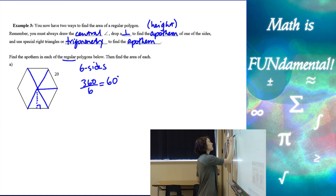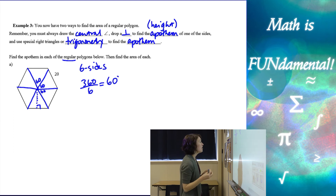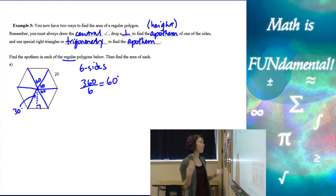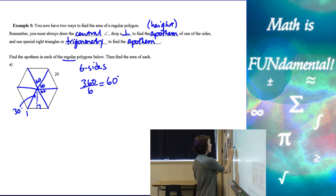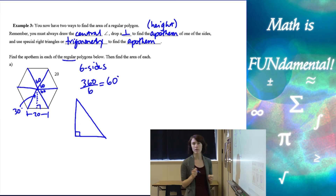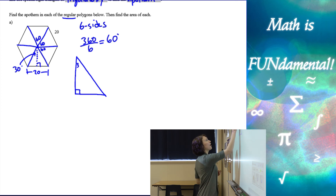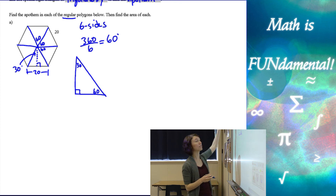If I find that central angle — angle one from the very beginning of this lesson — I'm going to take 360 divided by my number of sides, which gives me 60 degrees. So each one of these triangles has 60 degrees all around the shape at the center. Now if I take that and split it in half, this angle right in there is going to be 30 degrees. So I have a special right triangle — a 30-60-90 degree triangle — and I know that this length is 20.